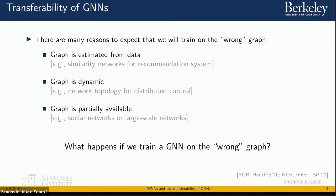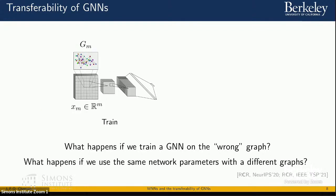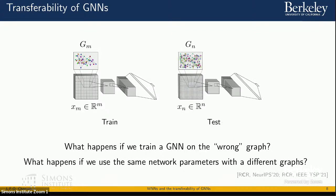Going back to the original question: what happens if we train on the wrong graph? More specifically, what happens if we train a graph neural network using one graph and then test on a different graph, freezing the coefficients but using a different graph convolution?